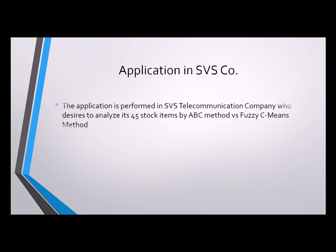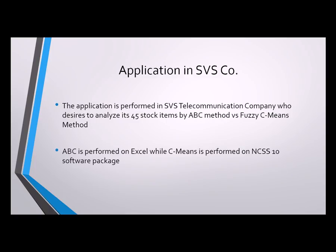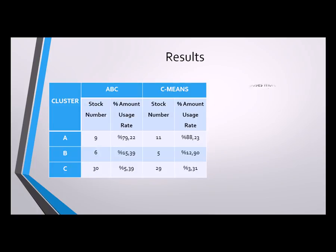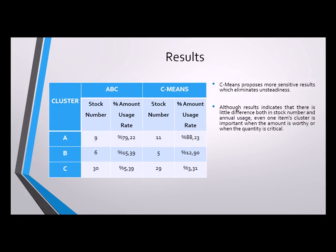SFC Telecommunication Company desires to analyze its 45 stock items using ABC versus Fuzzy Siemens method. ABC is performed on Excel while Siemens is performed on the NCSS 10 software package. C-means proposes more sensitive results which eliminate unsteadiness. Results indicate there is little difference both in stock number and annual usage, though even one item's cluster change is important when the amount is worthy or when the quantity is critical.